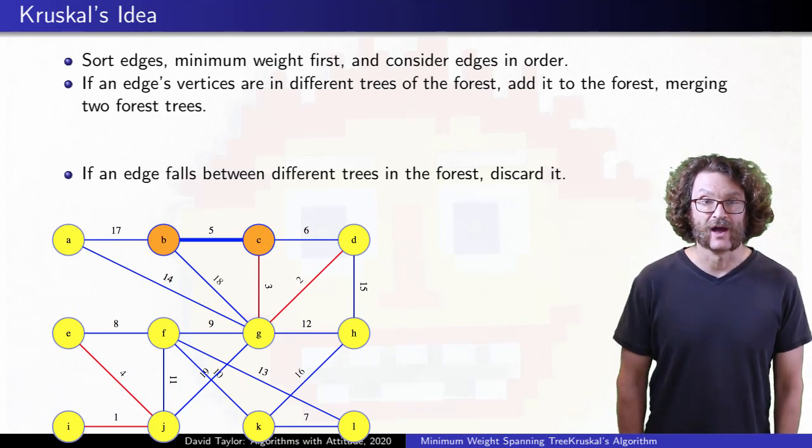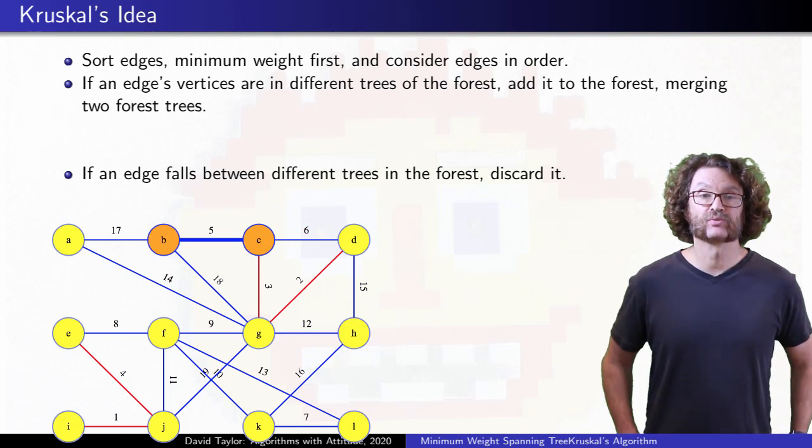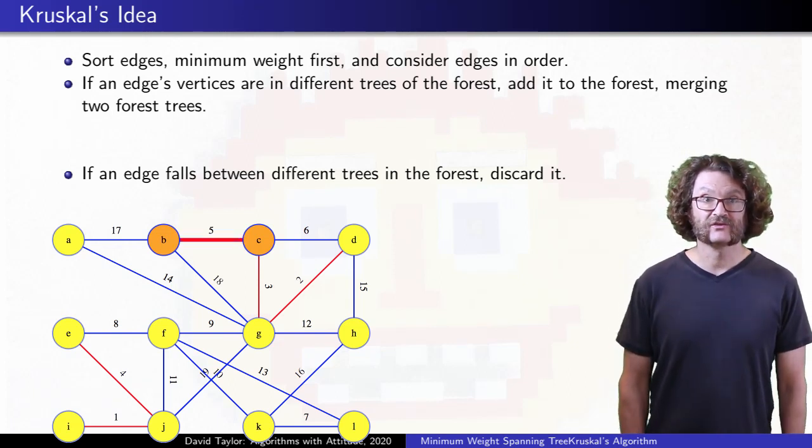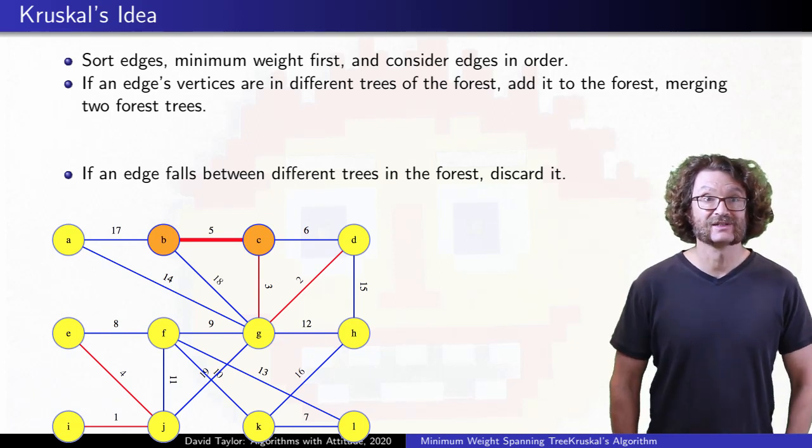So every edge in the graph, lighter than this one, goes between two vertices previously merged into the same tree. This edge is the lightest of all edges between any of the different trees.